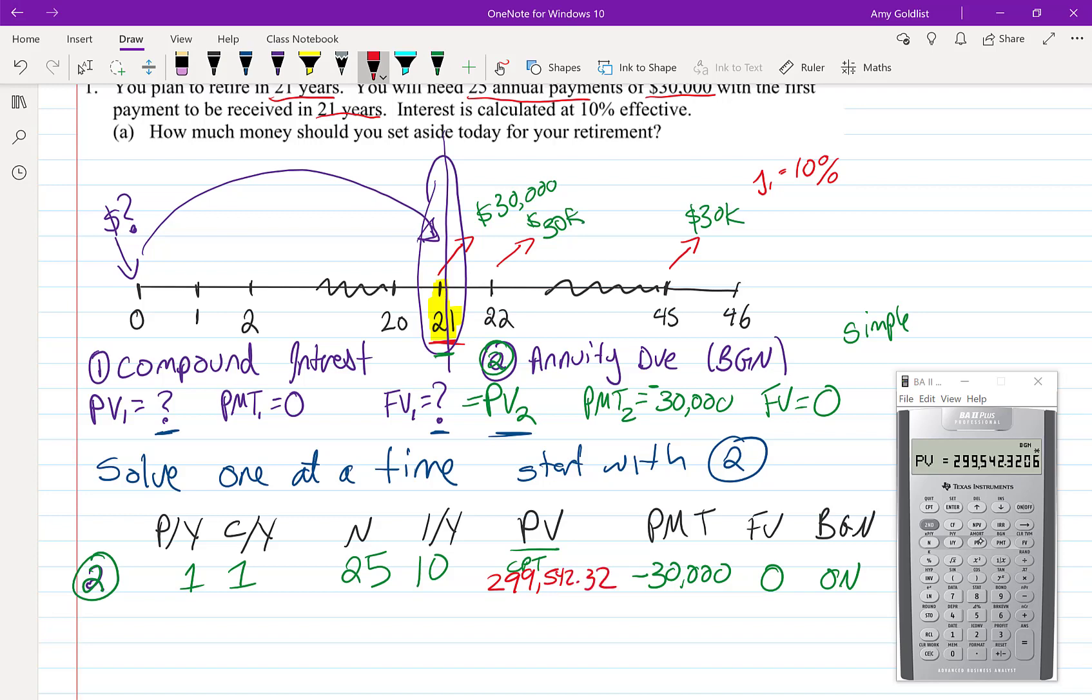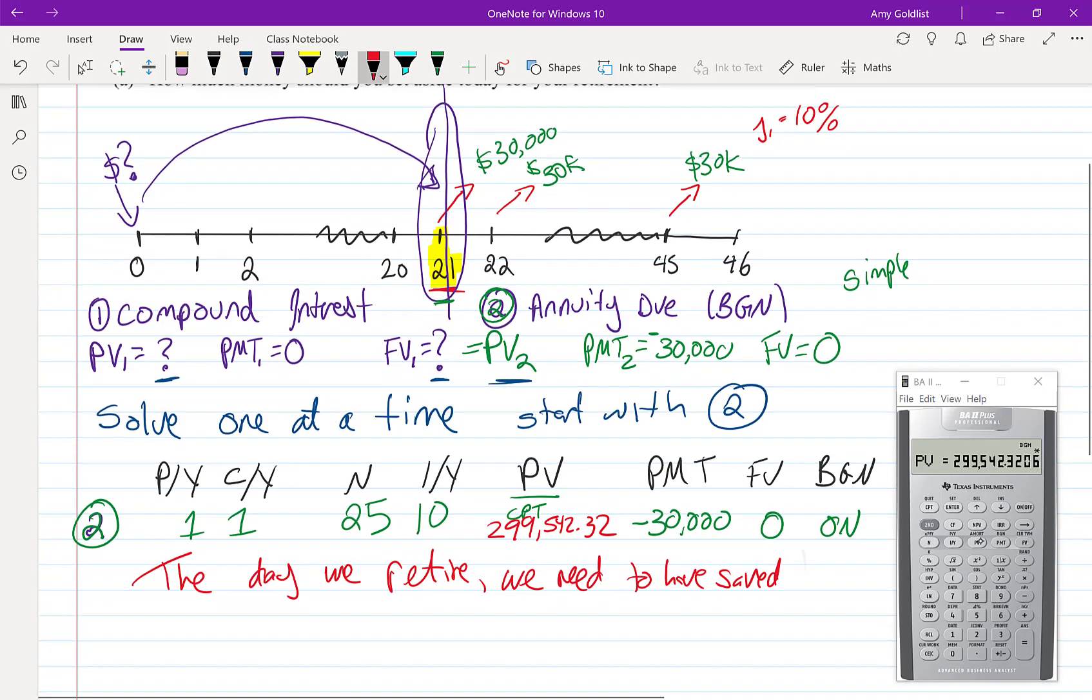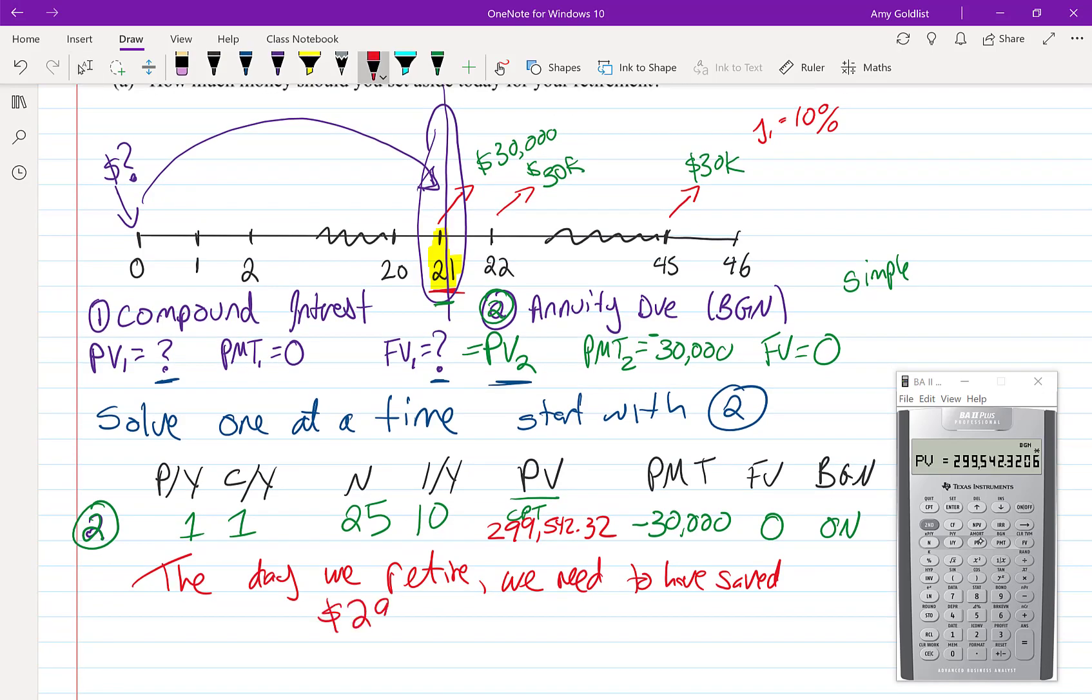What that means is the day we retire, I'm going to say we, it could be you, we need to have saved a lot of money. $299,542 and 32 cents. That could be around $30,000. So let's look at saving that much.